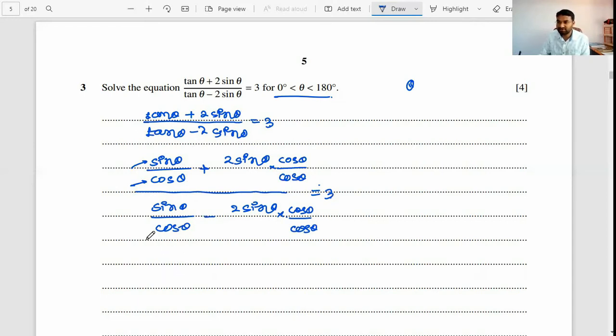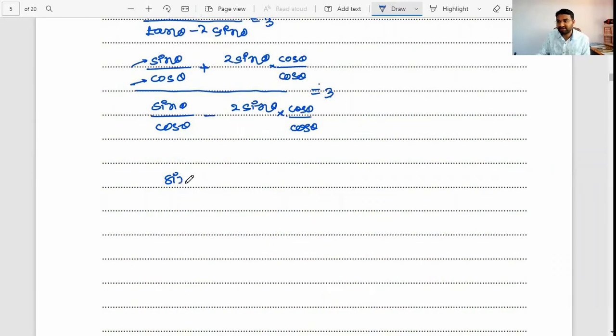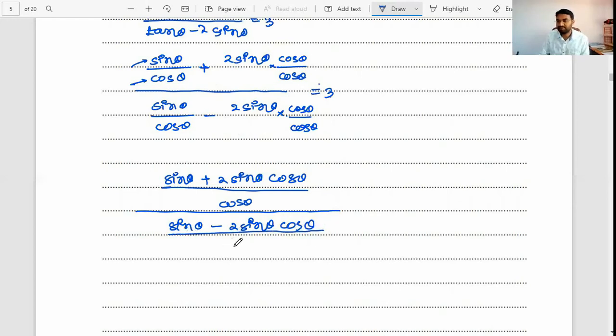Sin θ plus 2 sin θ cos θ upon cos θ, whole divided by sin θ minus 2 sin θ cos θ upon cos θ. This cos θ cos θ get canceled out and it is equal to 3.